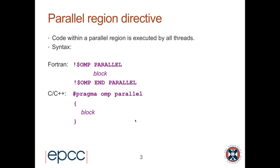Remember from last time: the code within a parallel region is executed by all the threads. The master thread starts executing the program initially on its own. When it reaches the first parallel region, it creates a team of threads, and all the threads then execute the code inside the parallel region. For Fortran, the syntax is '!$OMP PARALLEL' followed by a block of code, then '!$OMP END PARALLEL'. In C/C++, it's '#pragma omp parallel' followed by a block of code in curly braces.